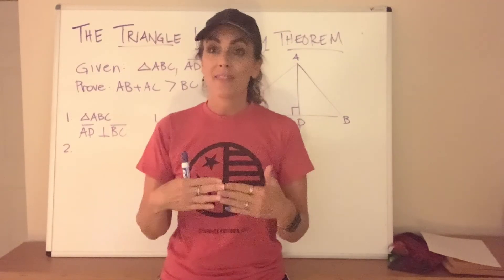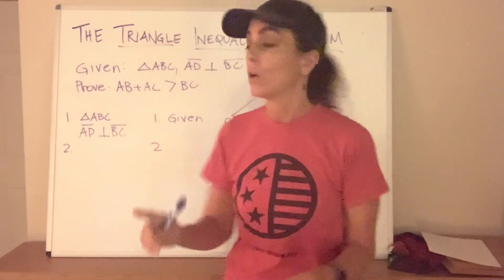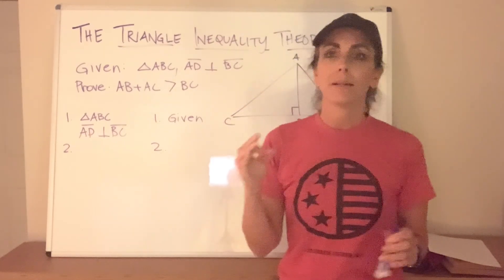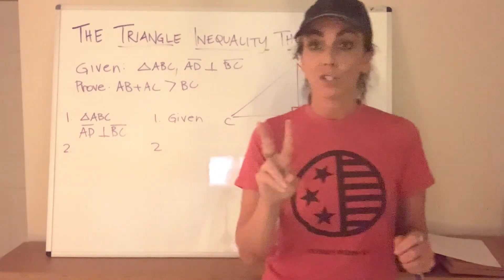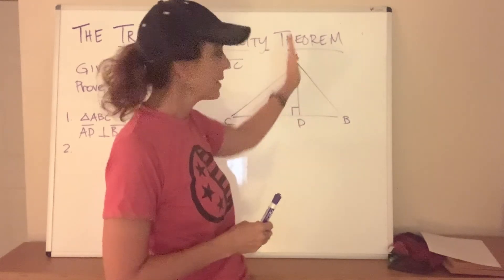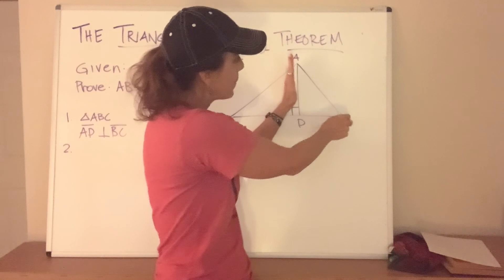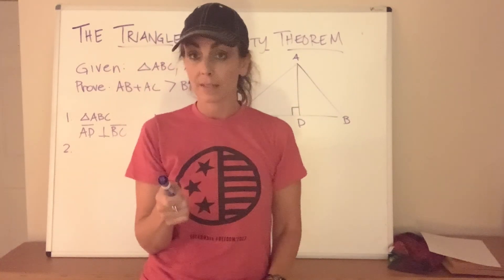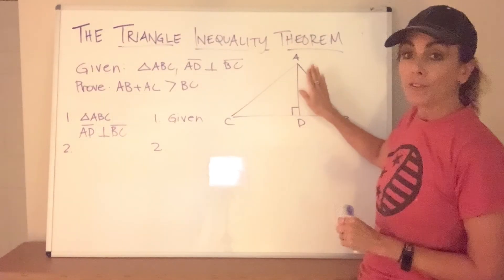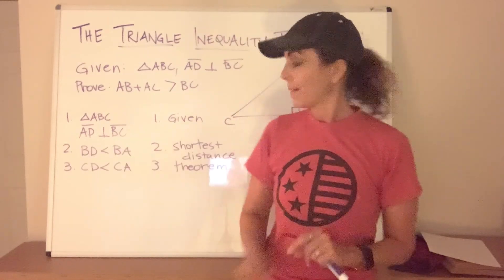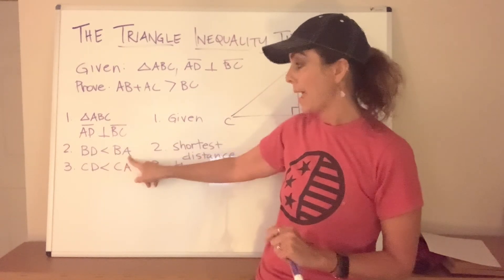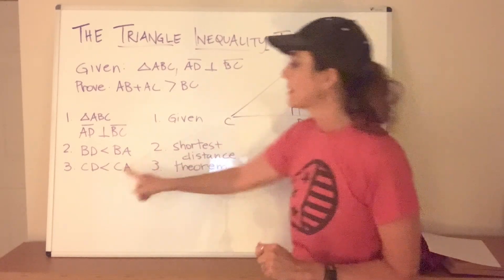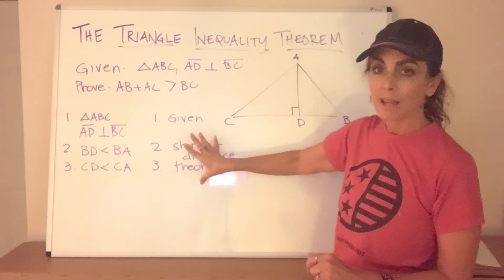Now we're ready to use that theorem in the main proof. With our first step already in place, the second step is to apply the Shortest Distance Theorem twice. Thinking about the line, the shortest distance from B to the line is BD, so BD is less than BA by the Shortest Distance Theorem. On the other side, CD is less than AC. So we have: the distance from B to D is less than the distance from B to A, and the distance from C to D is less than the distance from C to A — both by the Shortest Distance Theorem.